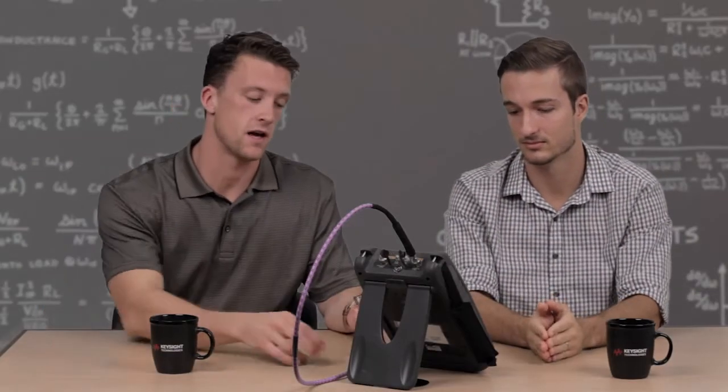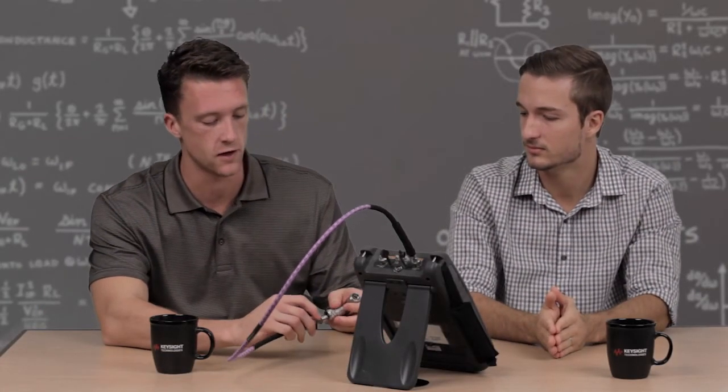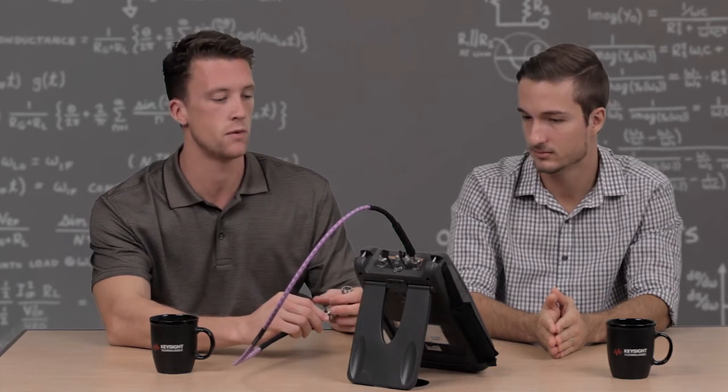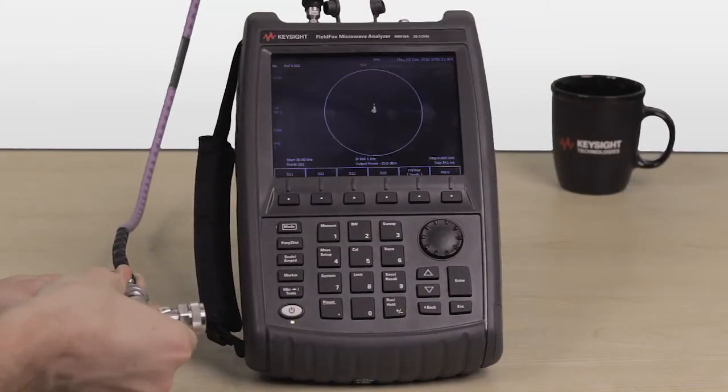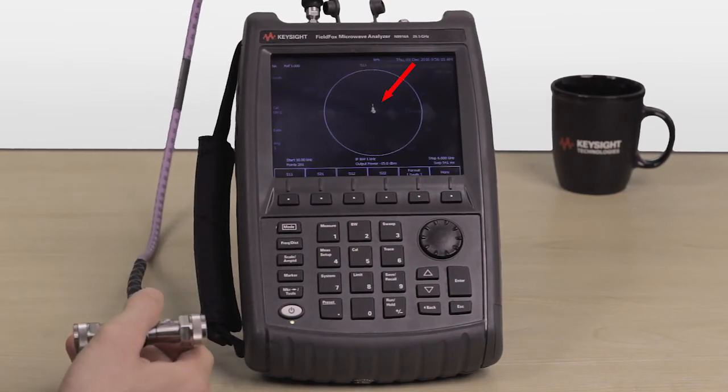And we can verify this calibration by hooking up a 50 ohm load to the end of the cable. And what we would expect to see on the screen would be a perfect match right in the center of the Smith chart. And that is exactly what we see.